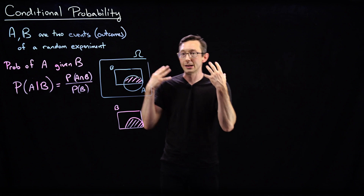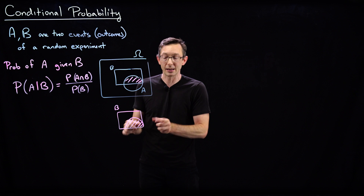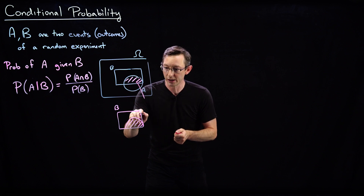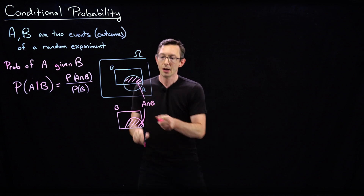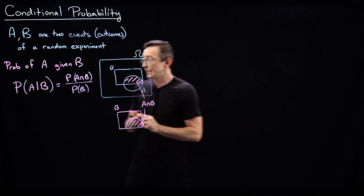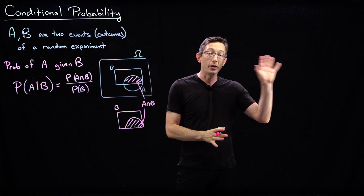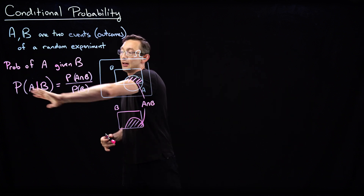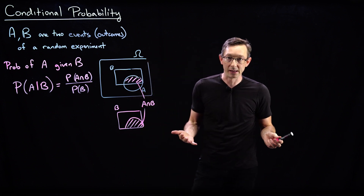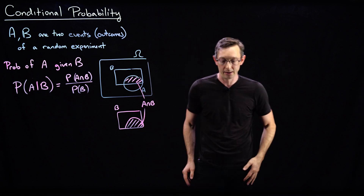You can convince yourself this is true. The picture helps: if I know event B happened, I zoom in to that event. The shaded region is A and B, so it's the probability of A and B over the probability of B. This is one of the most important ideas in all of probability. If I have two events and I know one happened, does that update my estimate of the other? Sometimes yes, sometimes no — and it's really intuitive. You'll see how it works in no time.